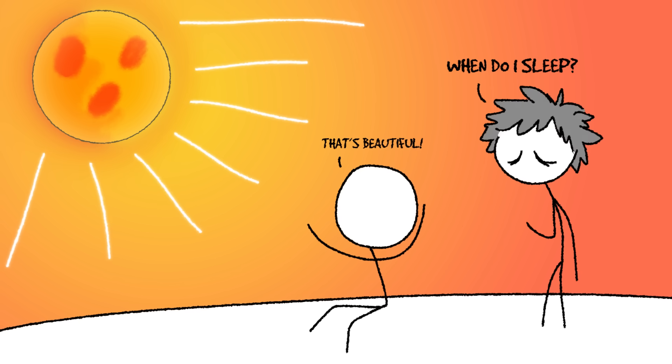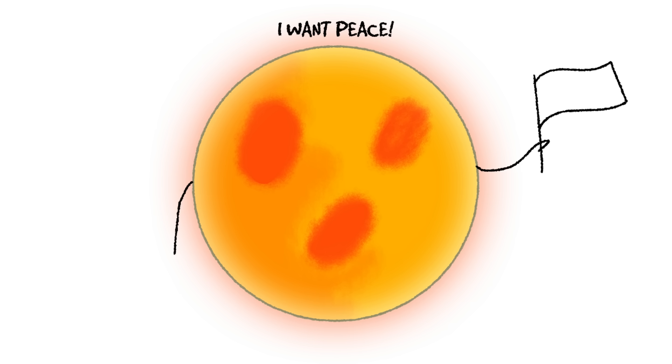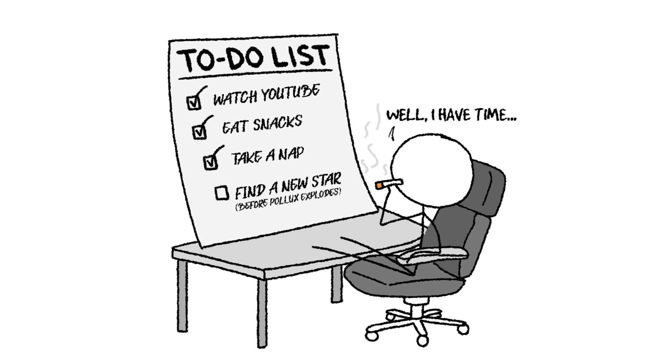Forget golden hour, hello golden day. And the best part, unlike Proxima Centauri, Pollux is stable. No deadly flares, no random explosions. But it wouldn't last forever. In about 700 million years, Pollux would start expanding even more before eventually dying off. That's not ideal, but hey, we've got time.